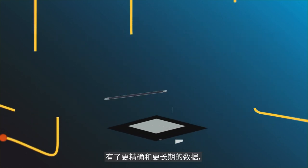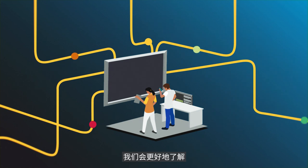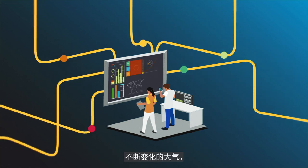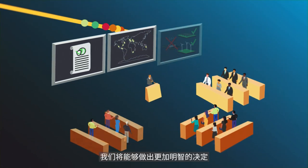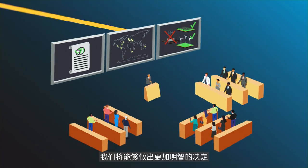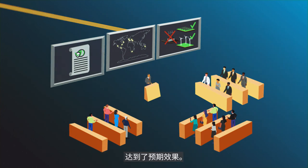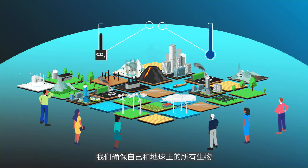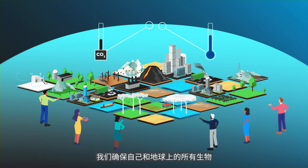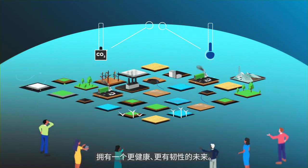With more precise and long-term data, we will gain a better understanding of our changing atmosphere. We will be able to make more informed decisions and we will understand if the actions we have taken are having the desired effect. By using information well, we will secure a healthier, more resilient future for ourselves and all living things on the planet.